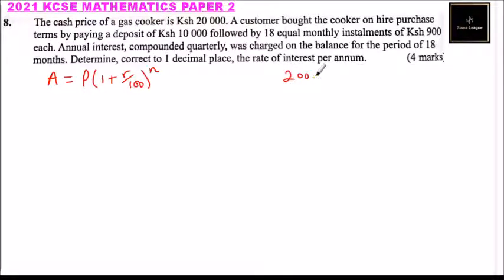If the cash price was 20,000 and the customer paid 10,000 deposit, that left a 10,000 balance. The amount paid on monthly installment equals 900 times 18 months, which totals 16,200. So the 10,000 balance attracted an interest of 6,200 Kenyan shillings.